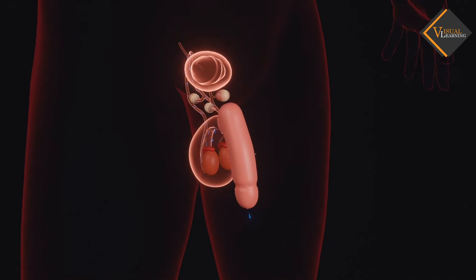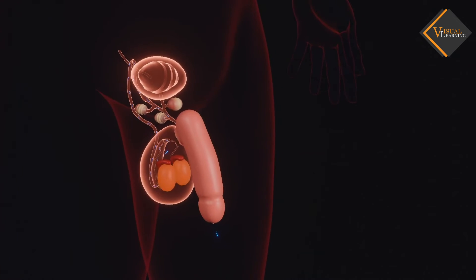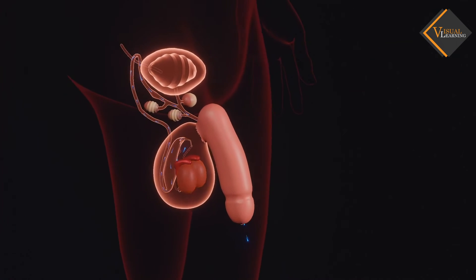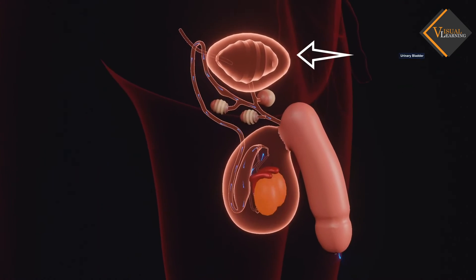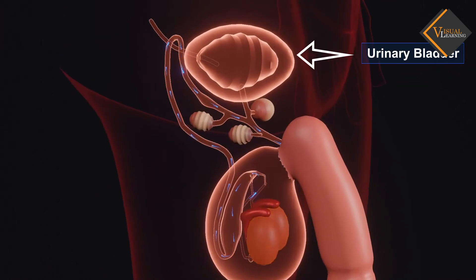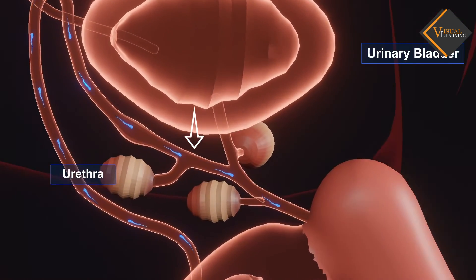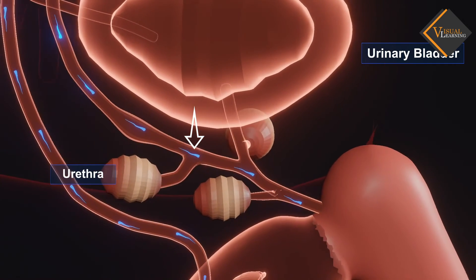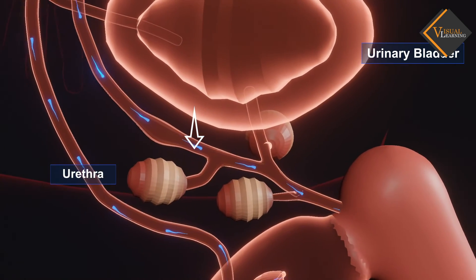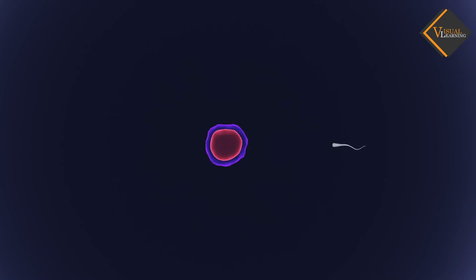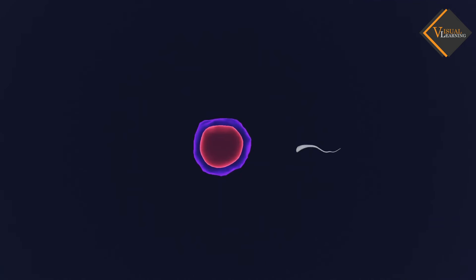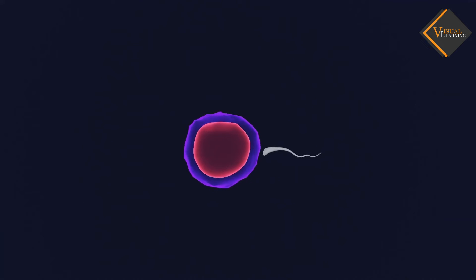The sperms formed are delivered through the vas deferens, which unites with a tube coming from the urinary bladder. The urethra thus forms a common passage for both the sperms and urine. The sperms are tiny bodies that consist of mainly genetic material and a long tail that helps them to move towards the female germ cell.